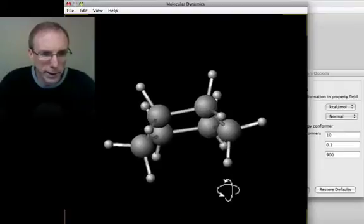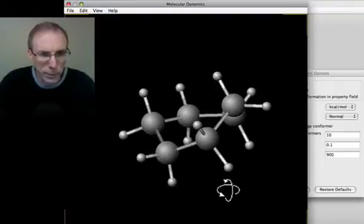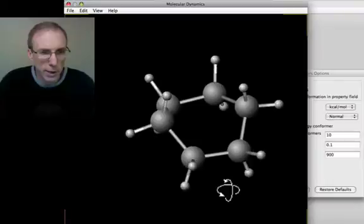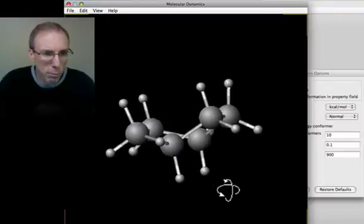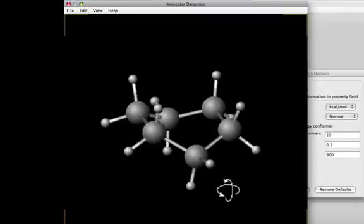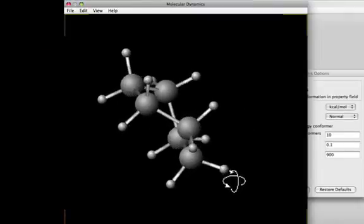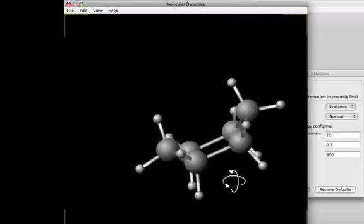It never relaxes back into that most favored chair form. The second thing to notice is that compared to cyclopentane, the ring atoms pucker at a much slower pace. So cyclohexane seems to be moving almost in slow motion as far as ring puckering goes.